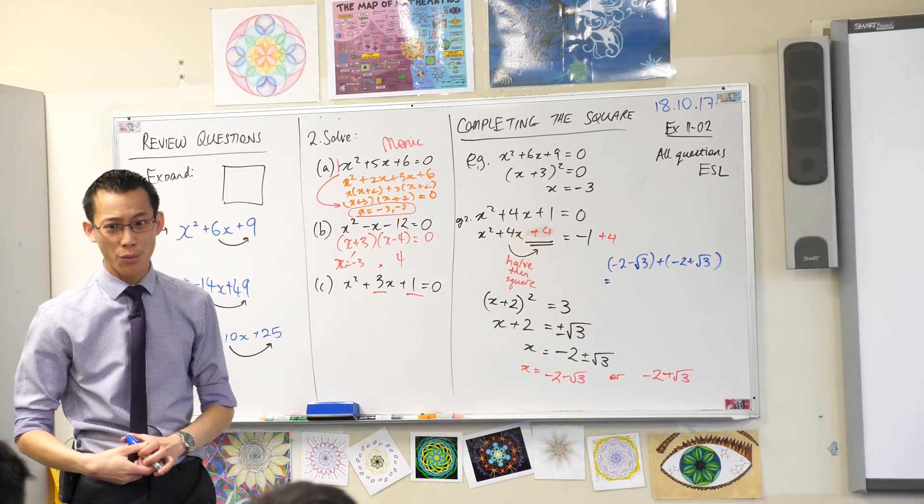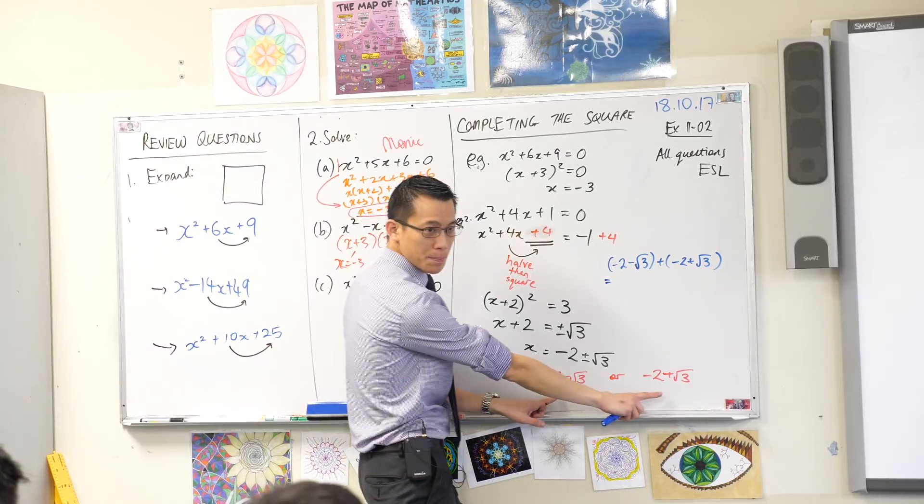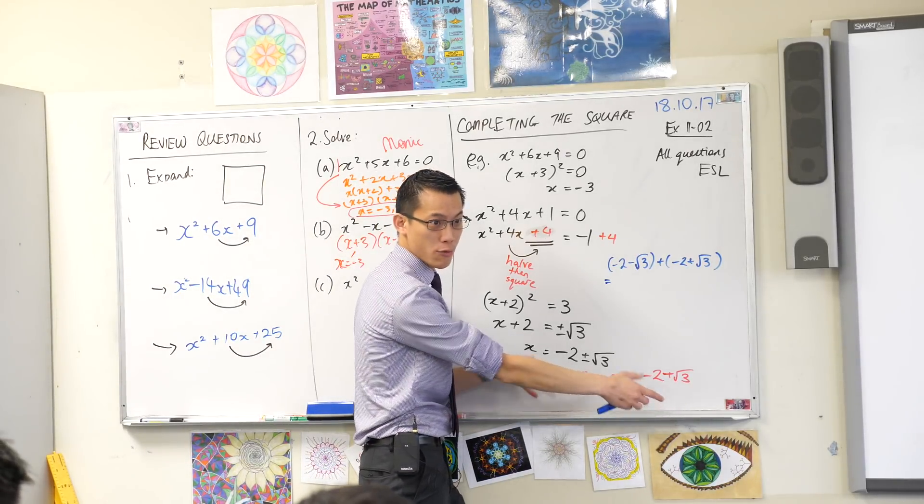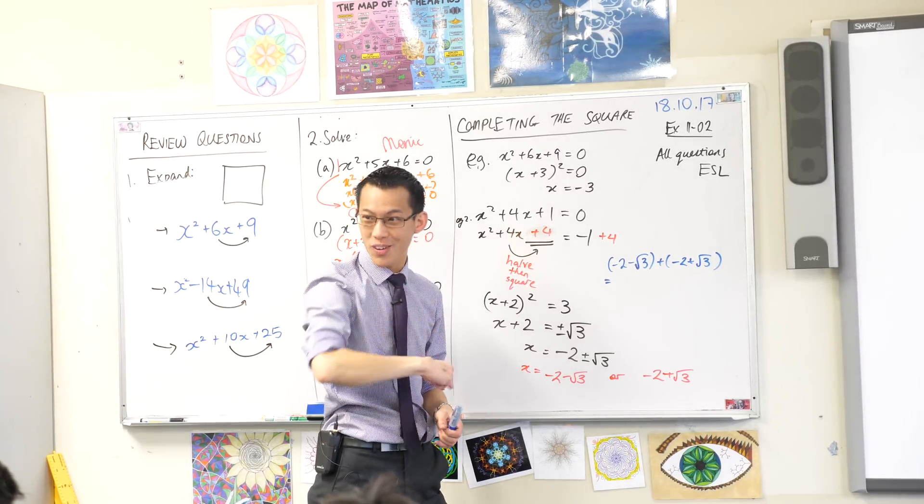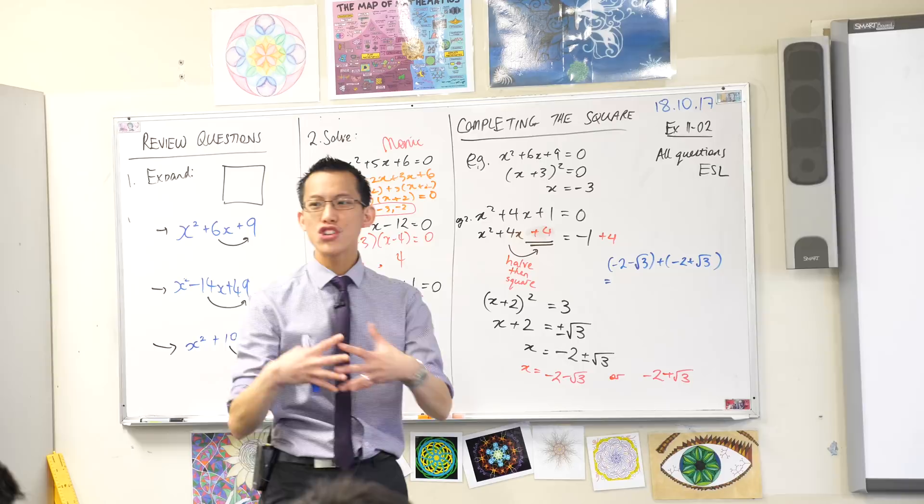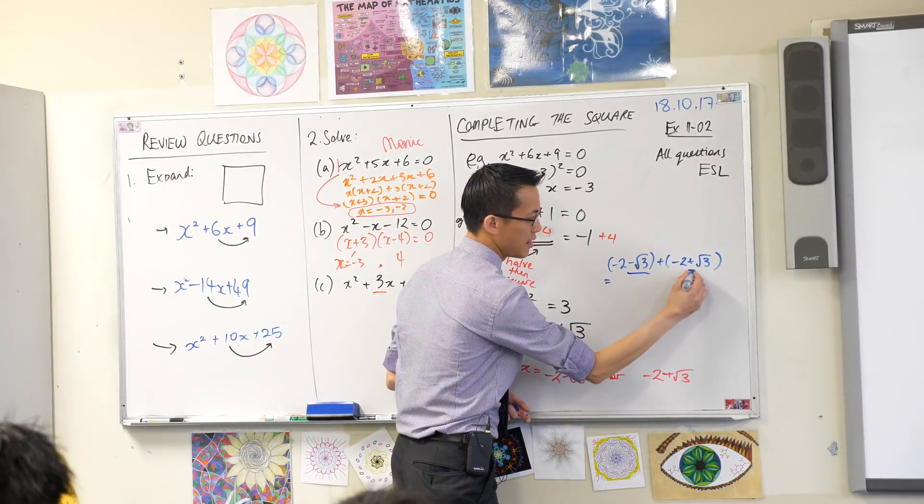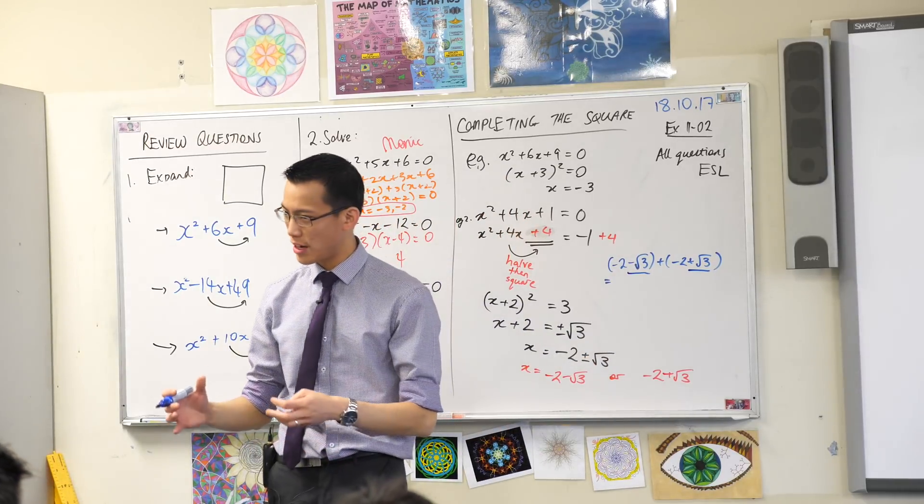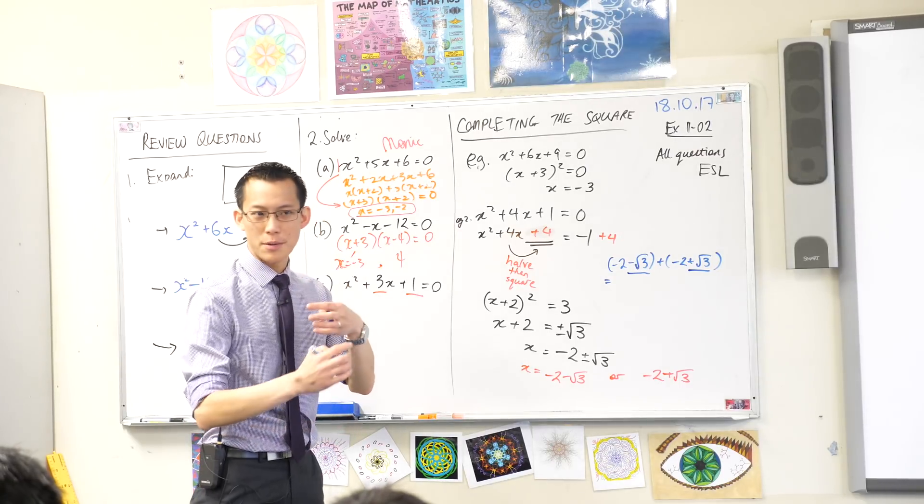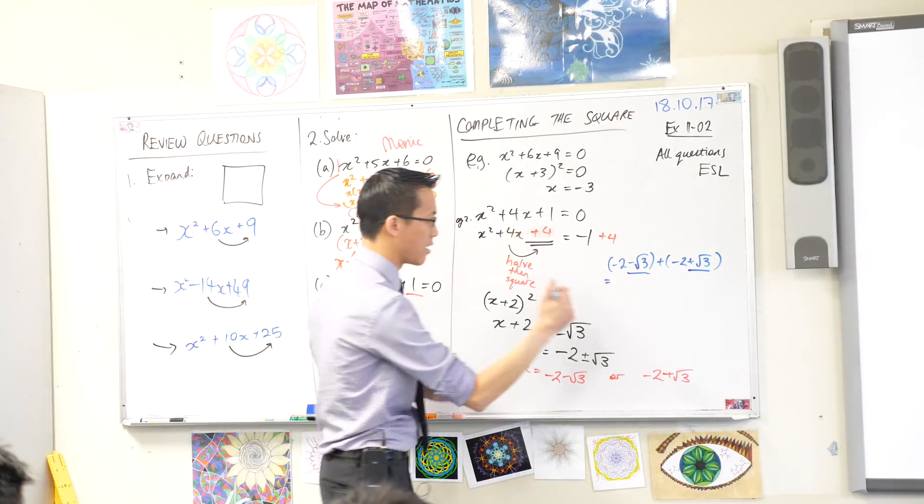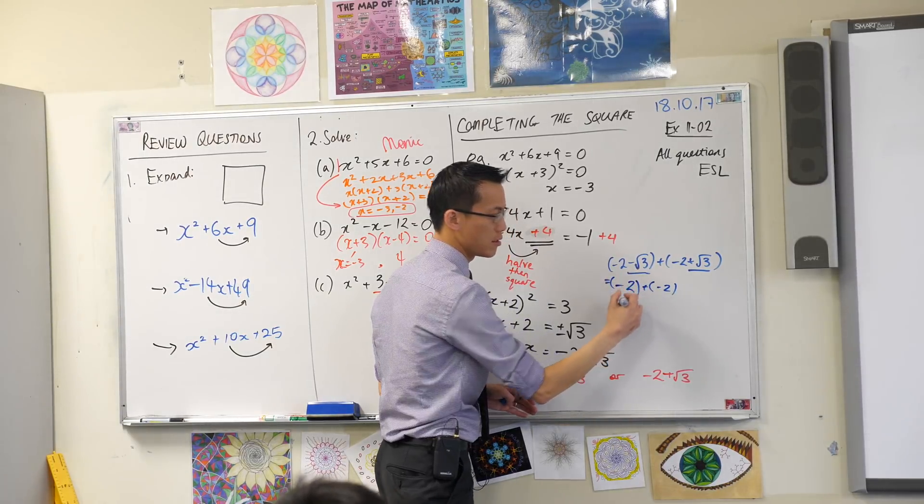These guys are important. If you think back to when we did surds at the start of the year, I said this pair of numbers actually has an important name. They're related in an important way. It starts with a C. Very good. These are called conjugates. Now conjugates match up because look. See how there's a -√3 and a +√3? What happens when you add them together? They cancel out. So you get left with this. Do you see that?